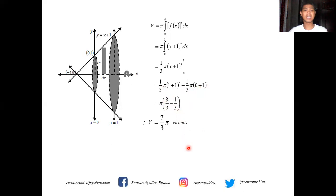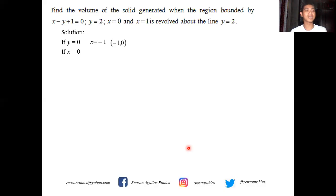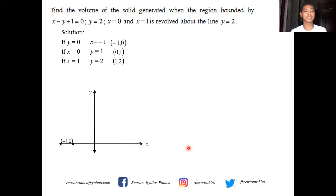What if the axis of revolution is no longer the x-axis? We use the same boundaries — x minus y plus one equals zero, x equals zero, and x equals one — but now revolve the region about the line y equals two. The points of intersection are (−1, 0), (0, 1), and (1, 2). We draw the line y equals x plus one, x equals zero, x equals one, and the line y equals two. Since the axis of revolution y equals two is horizontal, we take a vertical element. Here R is the radius and dx is the width.